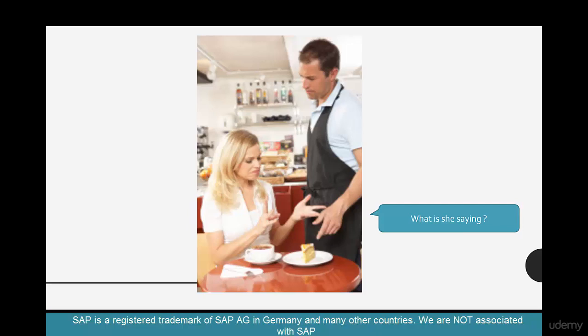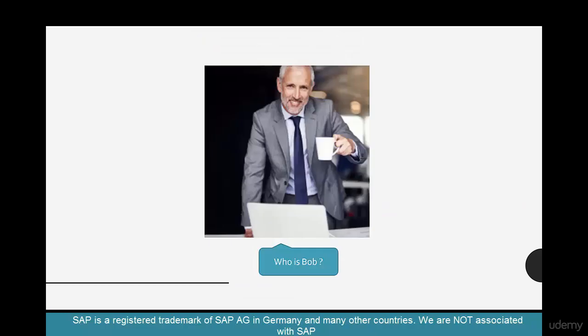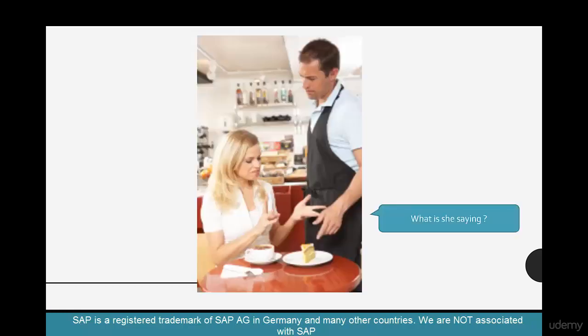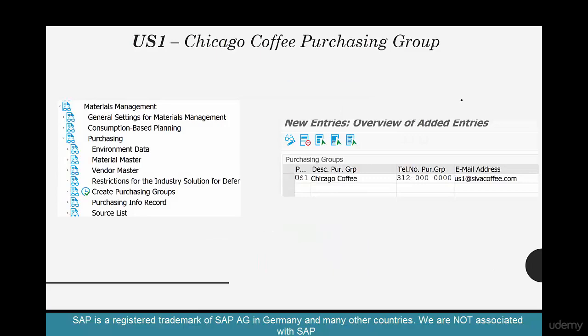A couple of months into my business, I've repeatedly observed that most of my customers were complaining about the quality of the coffee. So I hire somebody who's a specialist in coffee procurement — say Bob — and I'm going to create a purchasing group which would include Bob and anybody else working for him, and call it a purchasing group for coffee. Anytime I want to procure coffee, I'm going to use that purchasing group.